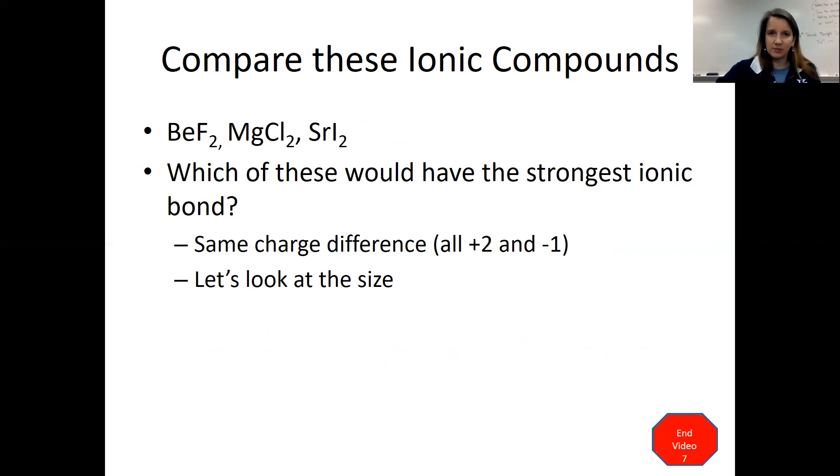So let's take a look at their placement on the periodic table and think about their energy levels. So BeF2 is going to be the smallest because those particles, the Be and the F, only have two energy levels. So BeF2, MgCl2, that's going to be the middle size.